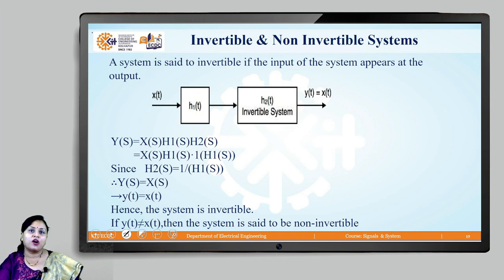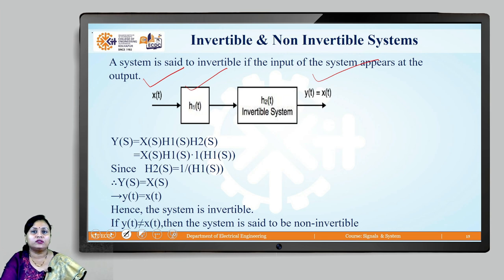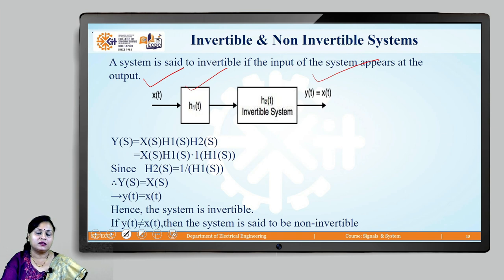Then comes invertible and non-invertible systems. If you see a system where the input appears at the output — represented in the diagram as input x(t) having a transfer function h(t) where two system operations give y(t) = x(t) — you will find that the output and input are equal. Such cases are called invertible. If the output is not equal to the input, systems are called non-invertible.